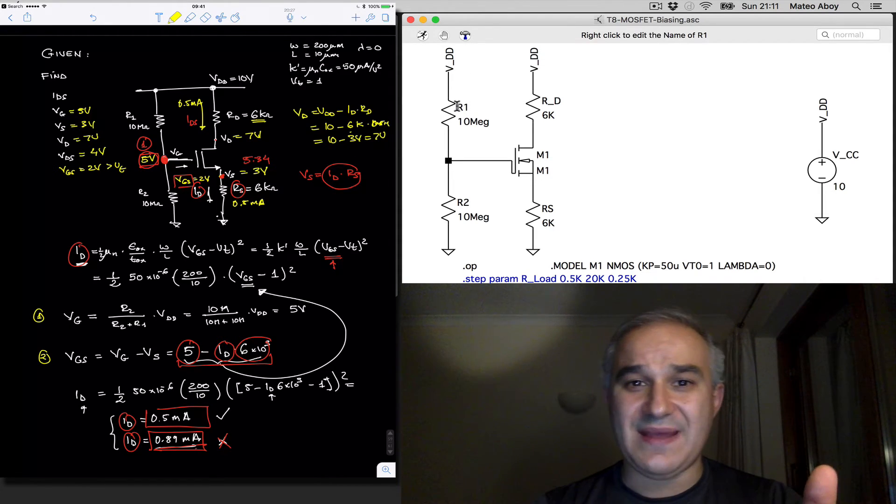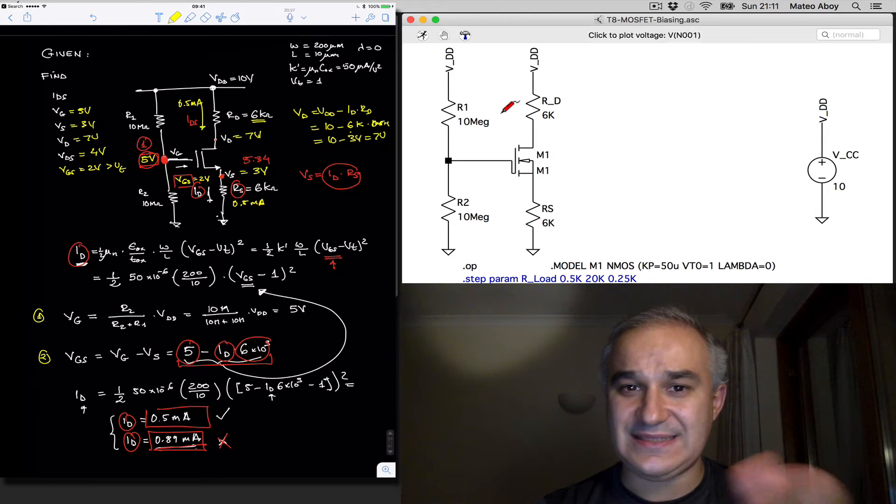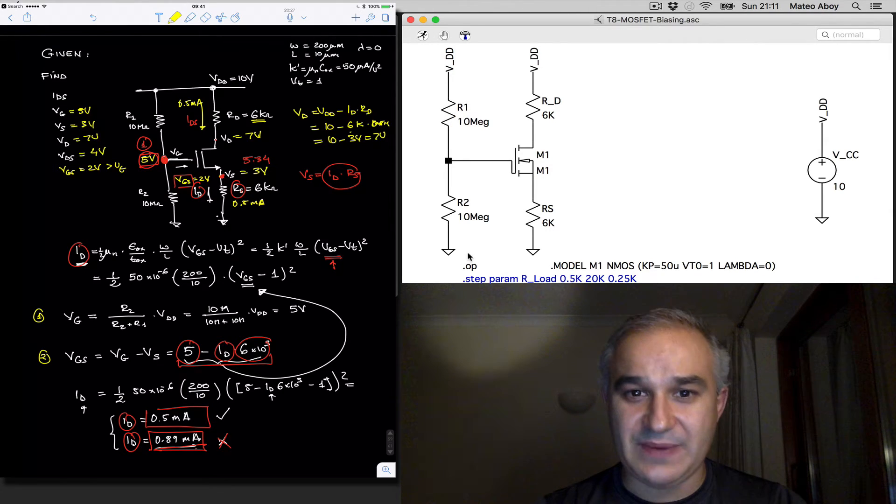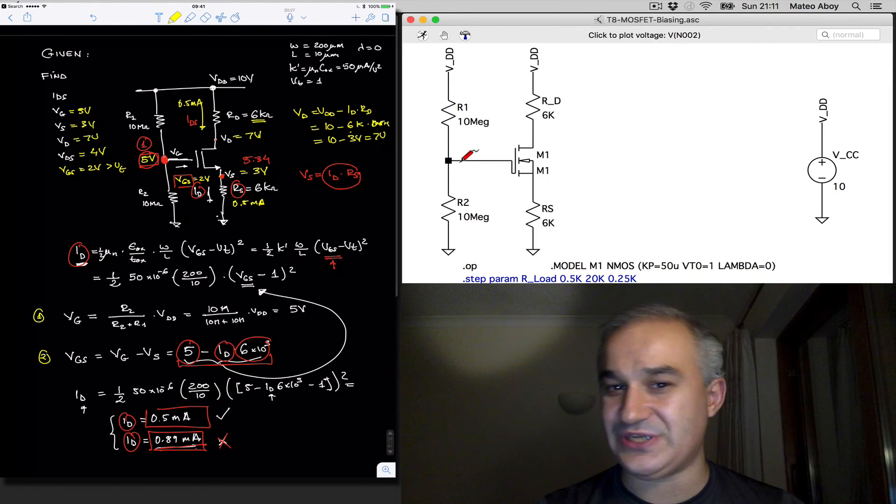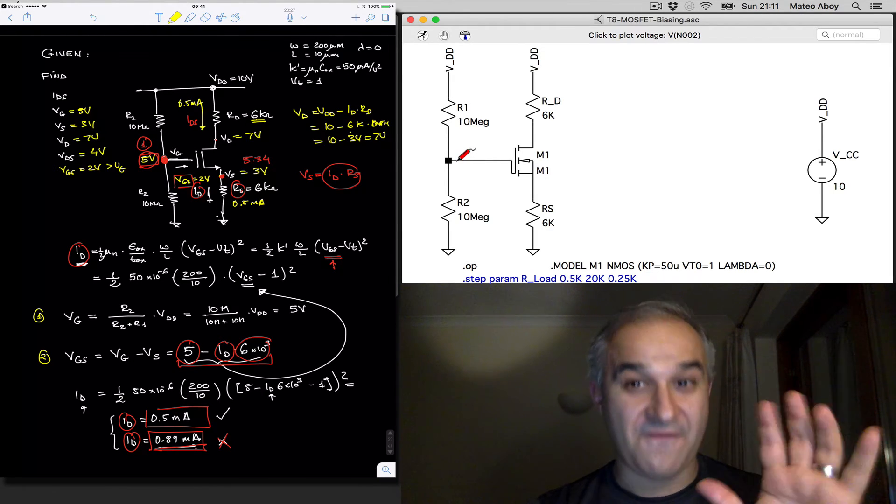So, let's do it quickly mentally. VDD is 10 volts. We have a voltage divider with two resistors that are equal, 10 meg and 10 meg. Therefore, the voltage at the gate, we expect that it's going to be 5 volts.